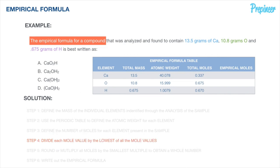Step 4 is to divide each mole value by the lowest of all mole values. Looking at our moles column, calcium has the lowest value at 0.337. So: 0.337 divided by 0.337 equals 1; 0.675 divided by 0.337 equals 2; and 0.670 divided by 0.337 equals 1.99.